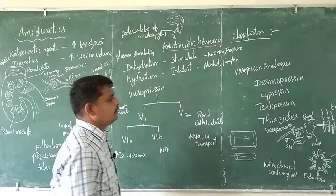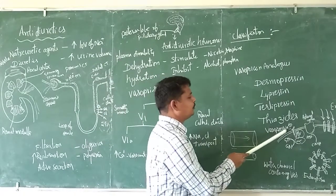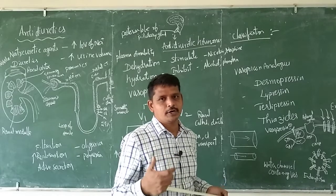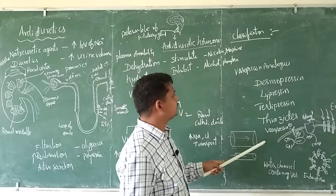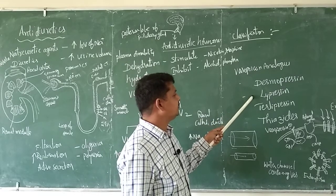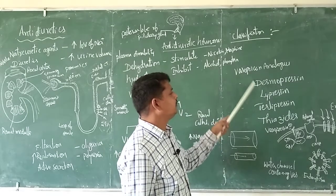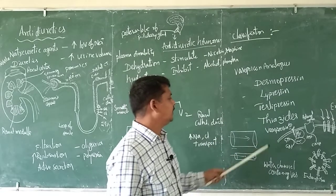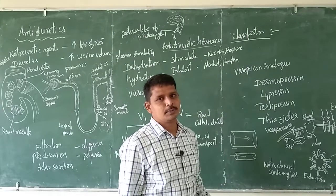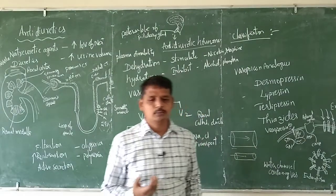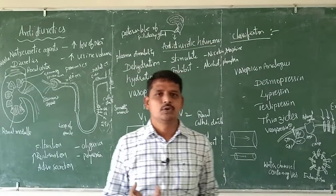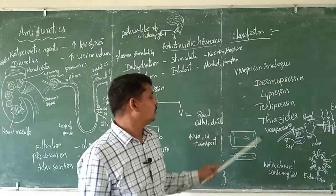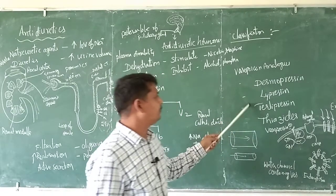When vasopressin is normally secreted, analogs of vasopressin — which are structurally and functionally similar — can be used. Examples of vasopressin analogs are desmopressin, lypressin, and terlipressin. These show the same activity as vasopressin. When the hormone is not synthesized naturally, we artificially prepare vasopressin analogs and administer them.